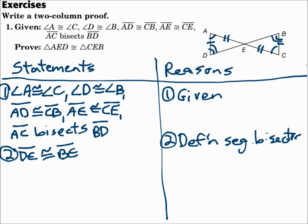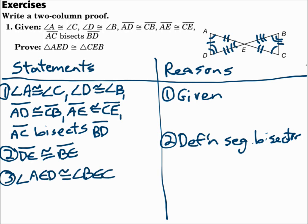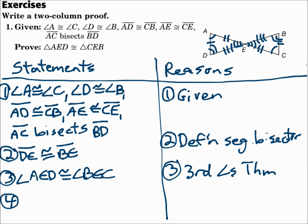For the third pair of angles, remember that if you know two pairs of angles are congruent, then the third pair of angles has to be congruent. So I can say that angle AED is congruent to angle BEC — why? Because of the third angles theorem, which says that if you have two triangles with two pairs of angles congruent, then the third pair of angles has to be congruent.